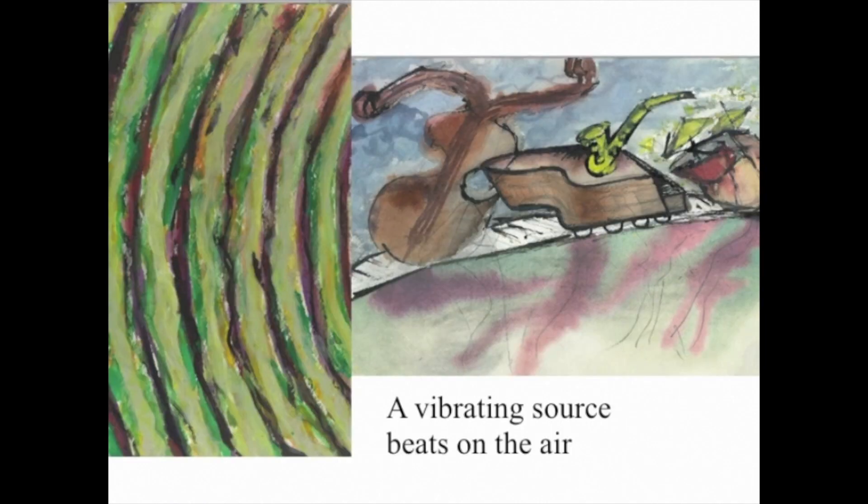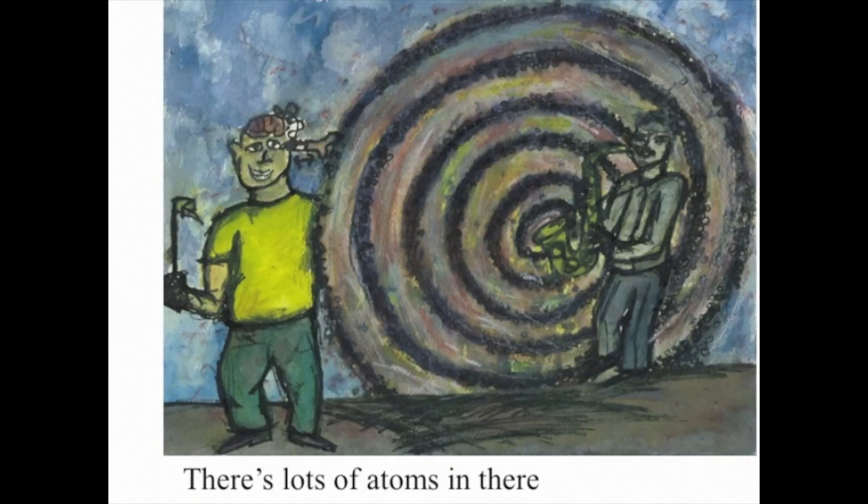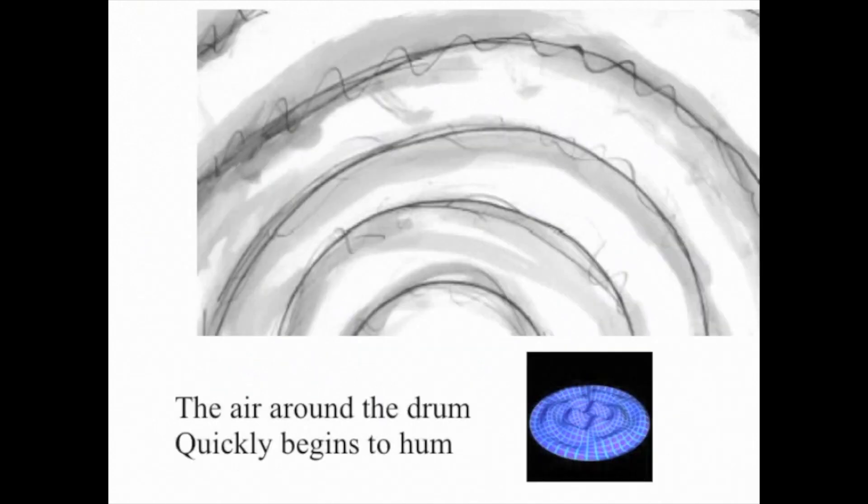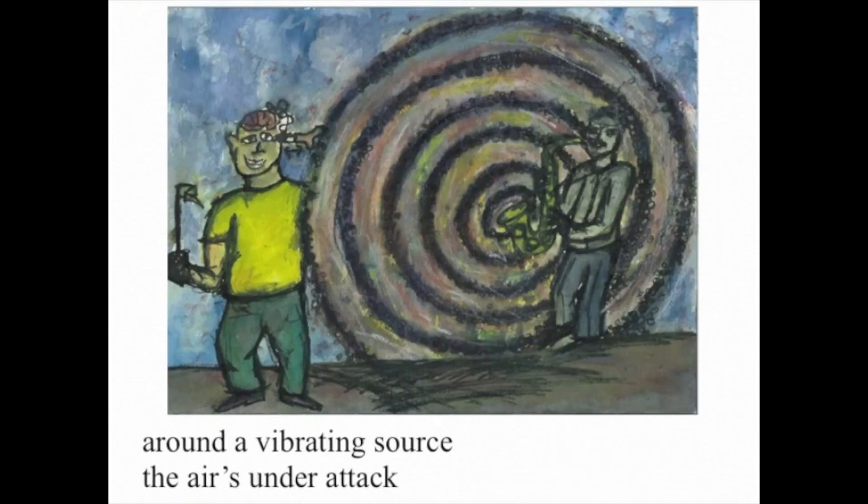A vibrating source beats on the air. Though the air looks heavy, lots of atoms in there. Take, for example, a vibrating drum. The air around the drum quickly begins to hum. As atoms run forward, as atoms fall back, with a vibrating drum, the air's under attack.